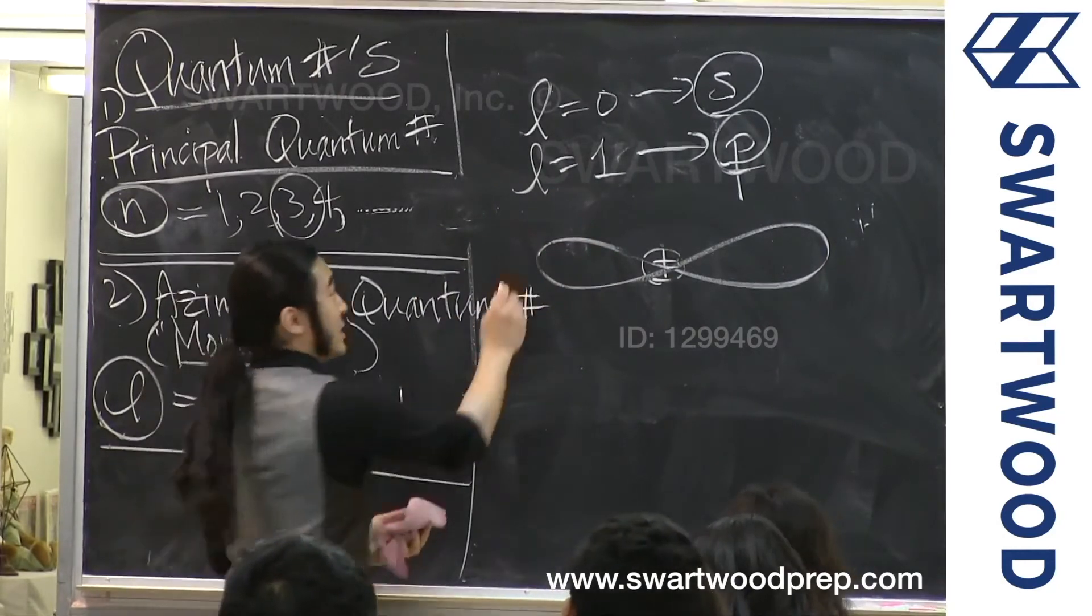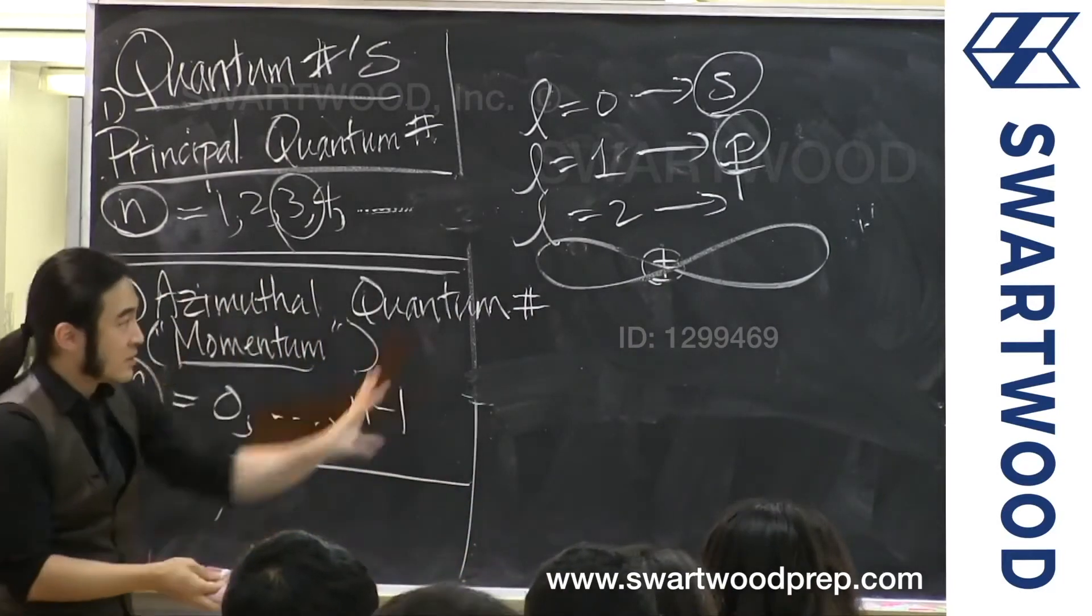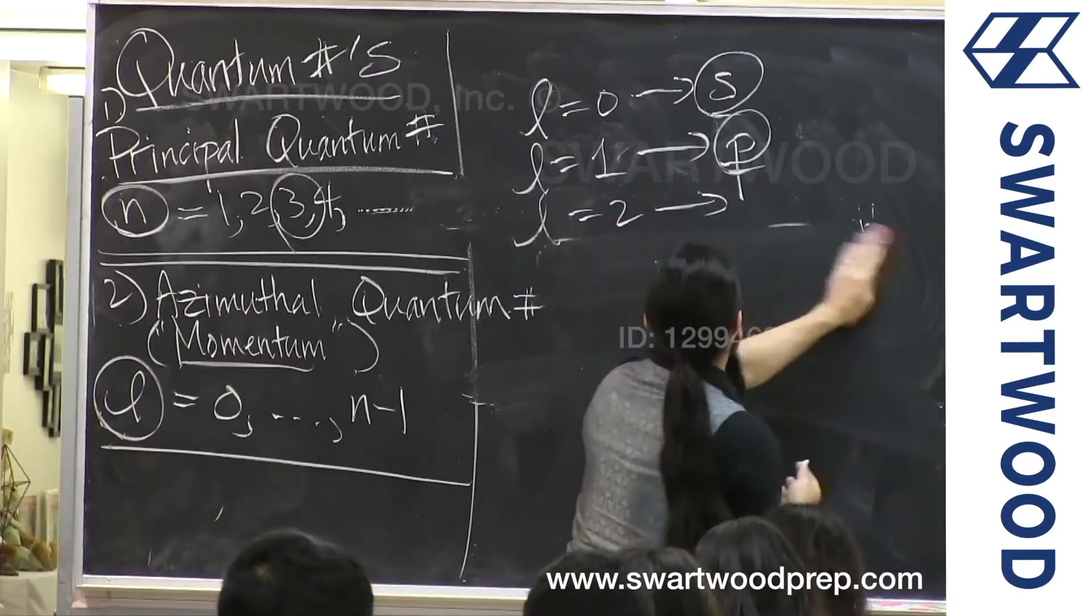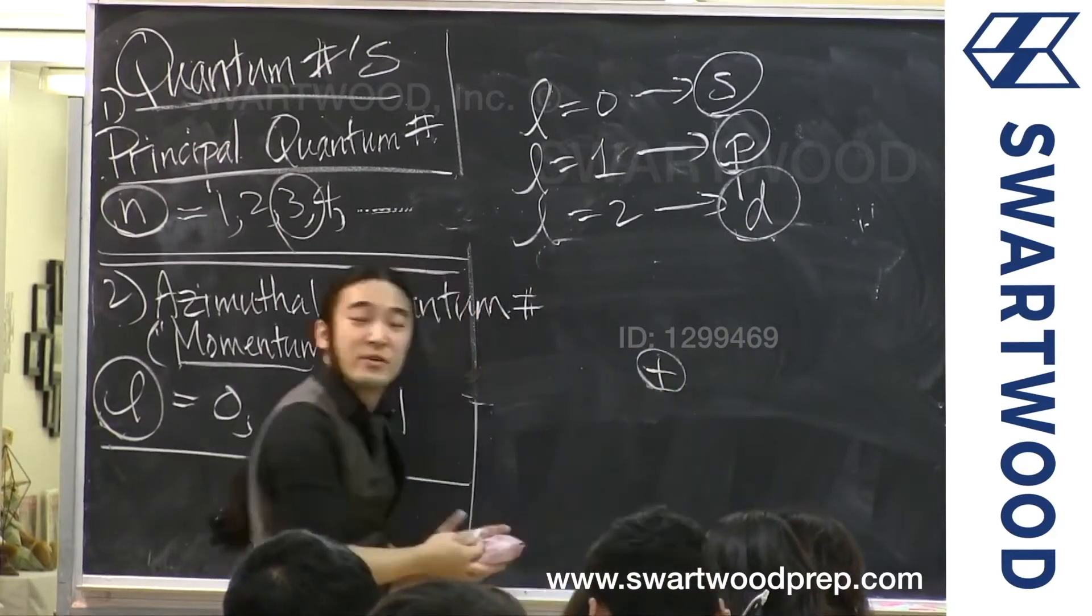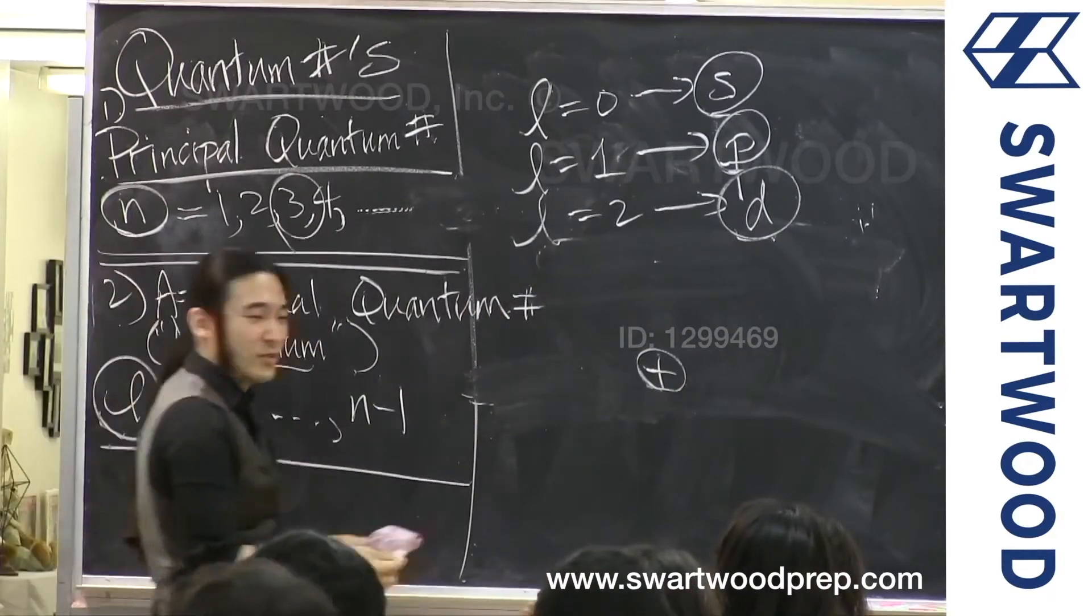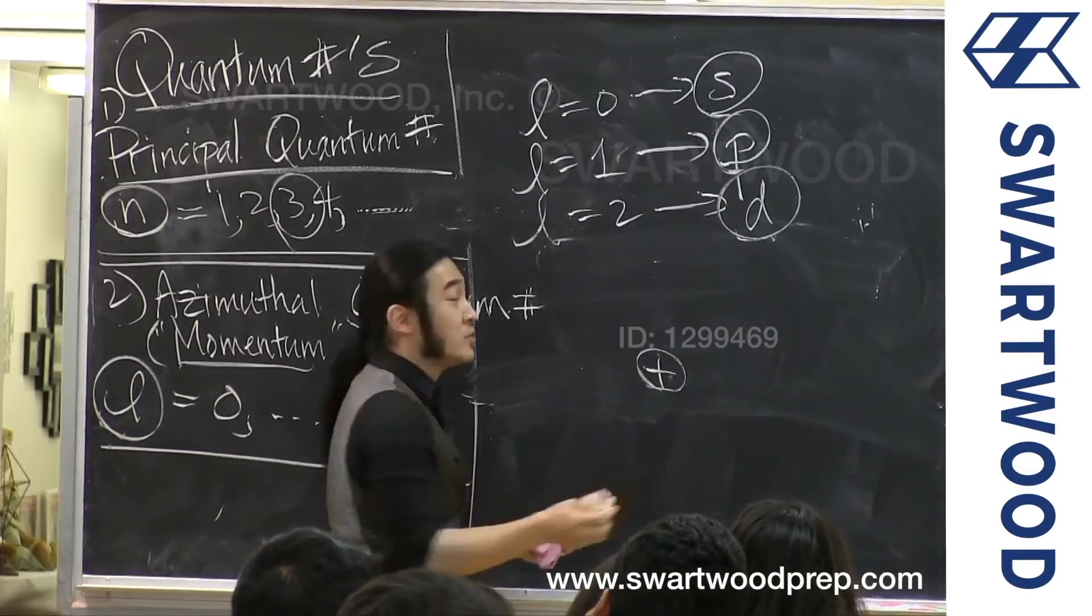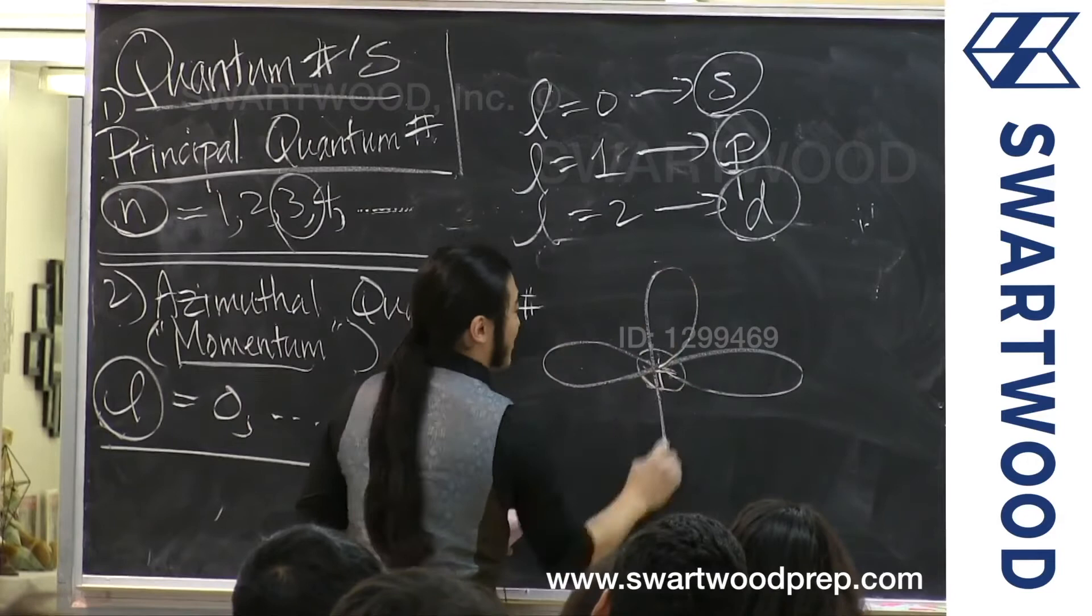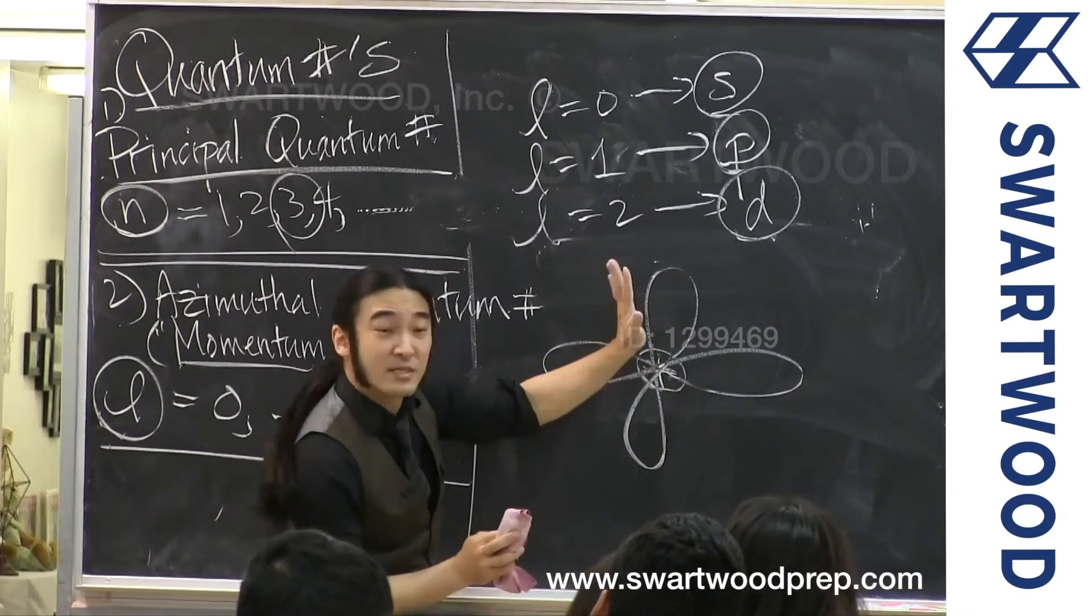What about l equal to 1? That's a fancier configuration. You can take this dumbbell shape. You recognize this. What do you call this orbital? P. What's really interesting is actually for all the tests you have to worry about, you could pretty much stop right here in terms of what they look like. I'm going to finish it just to be complete, because you should know the orbitals for sure. But in terms of what they look like for real, this is pretty much where it ends.